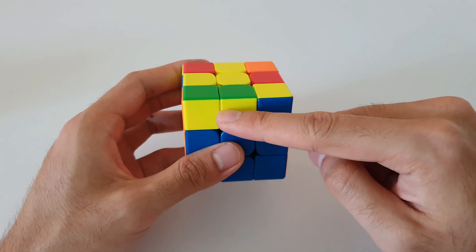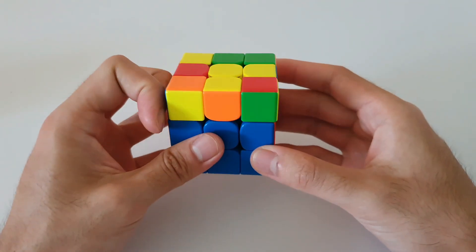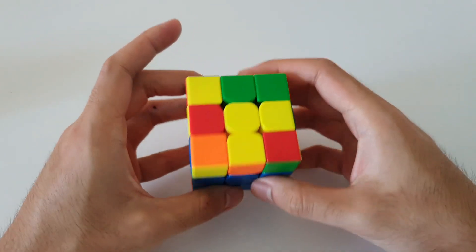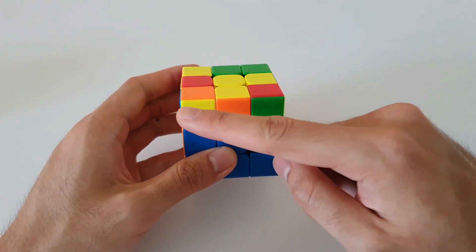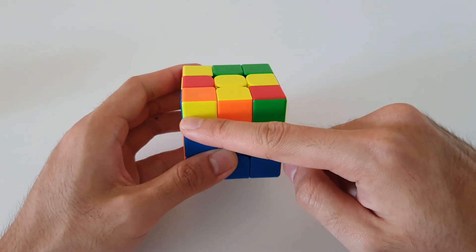And once again, we want to hold this at the back. So like this. So now that the 2x1 bar is facing the back, we want to look back to the front and look for the yellow corner facing the front.